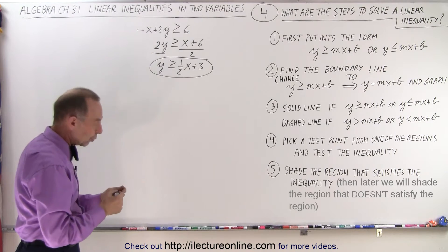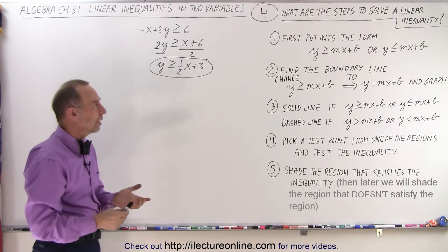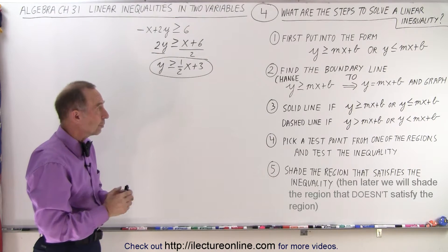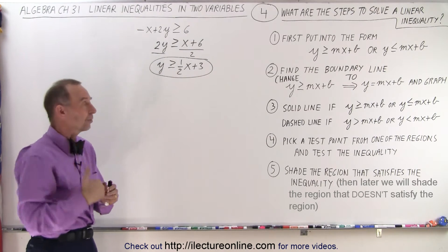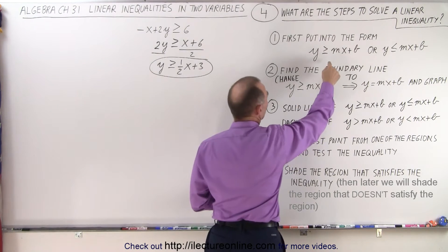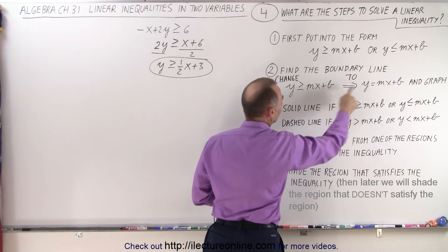Now, step number 2, we need to find the boundary, the boundary line of our region. So either it's on the left side or the right side or the top or the bottom side of the boundary. And so what we're going to do is we're going to change our inequality symbol to an equal sign, to turn the inequality expression into a linear expression.